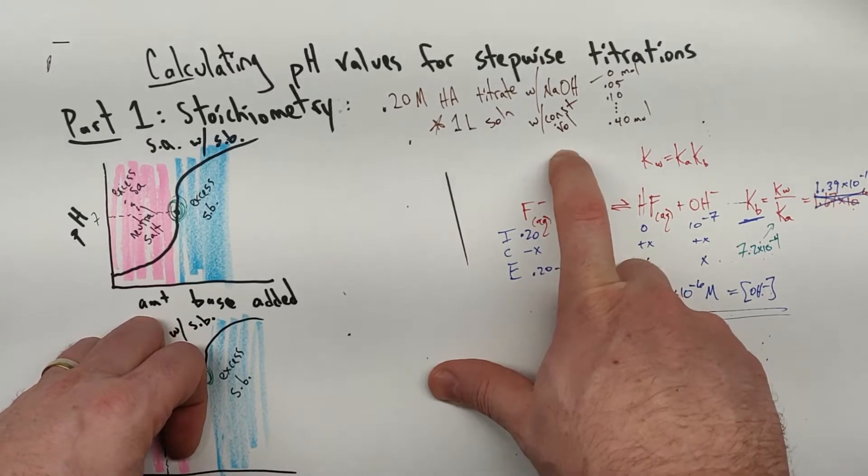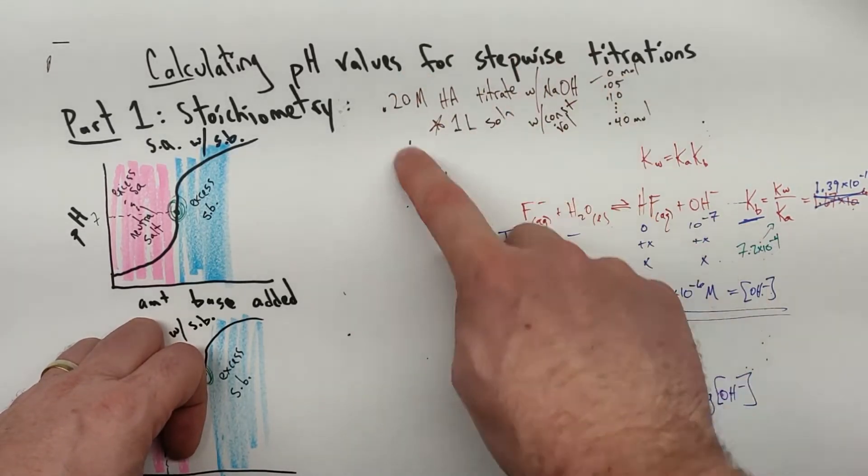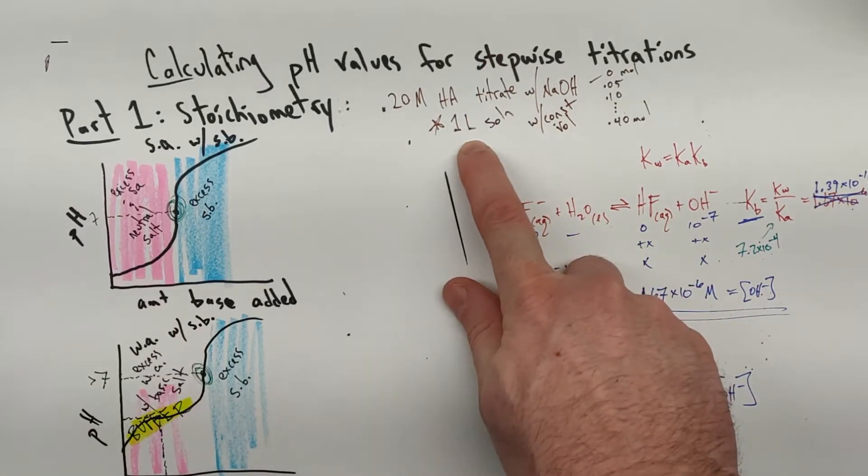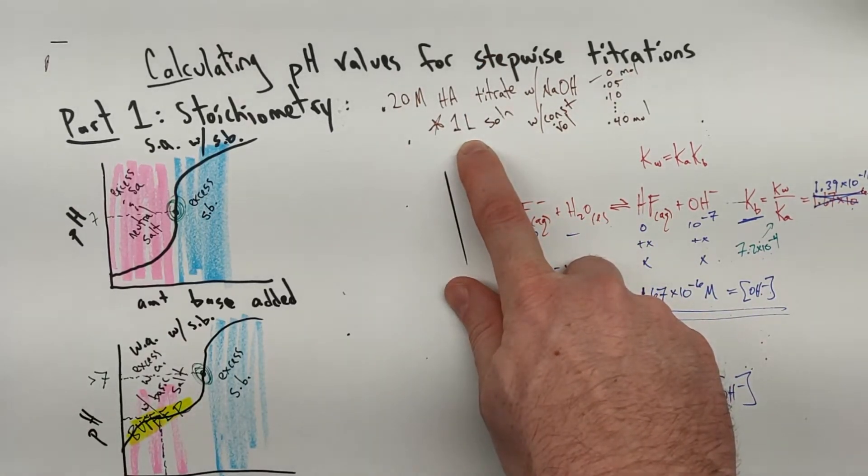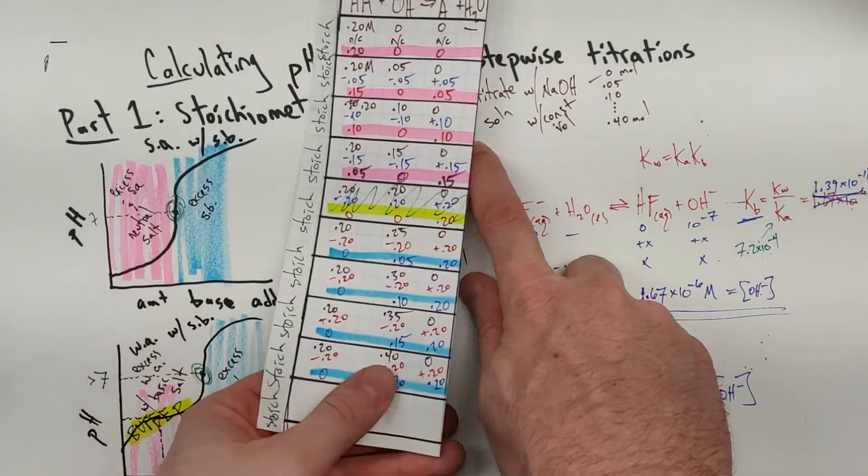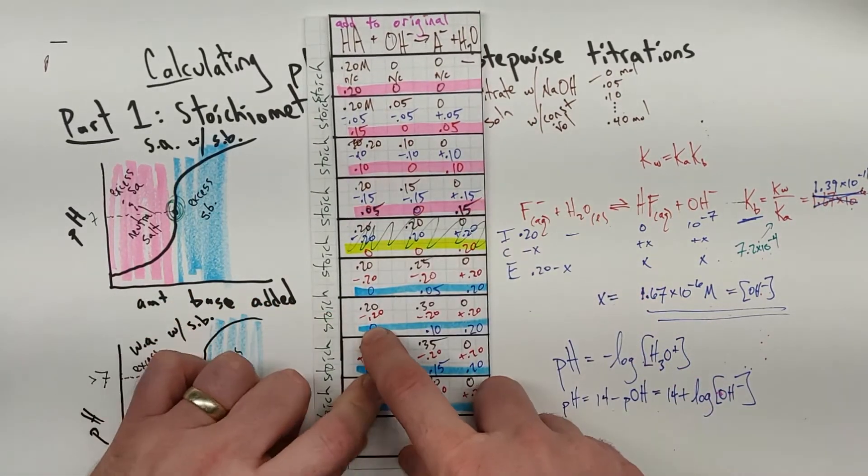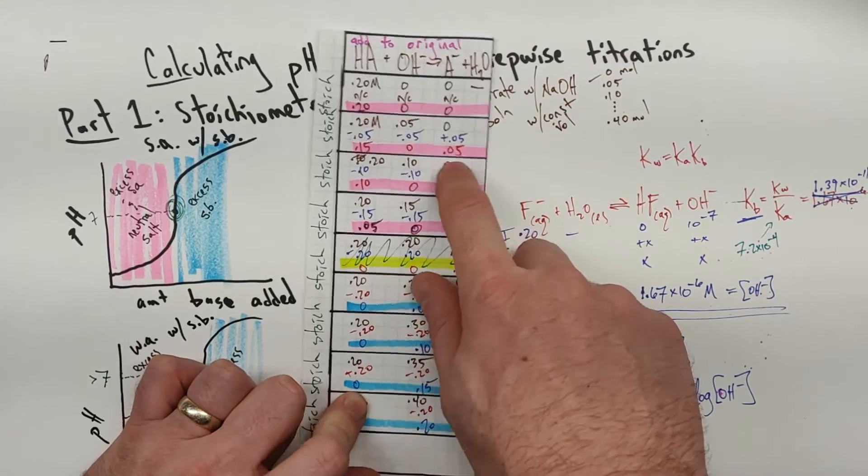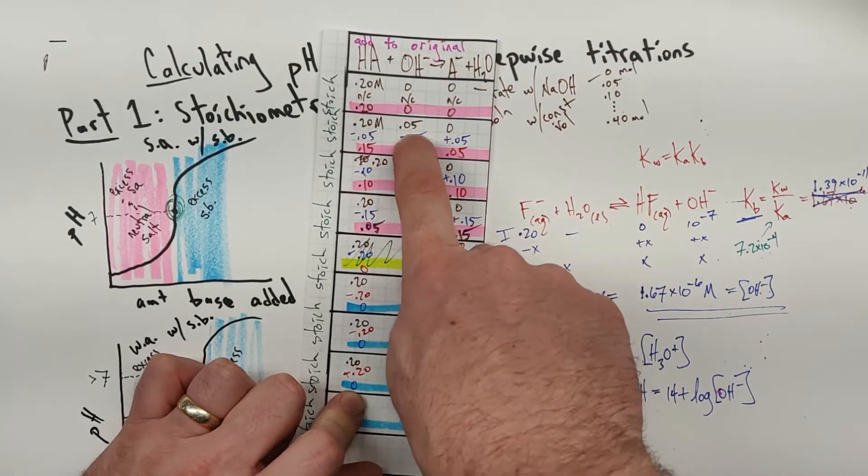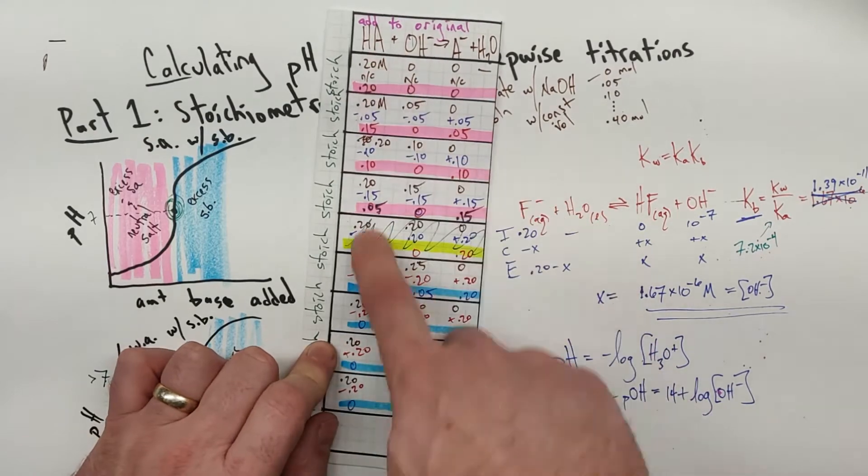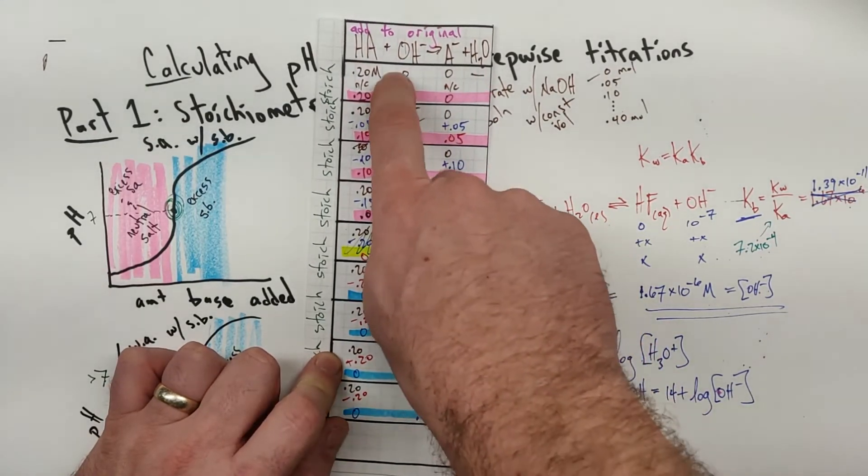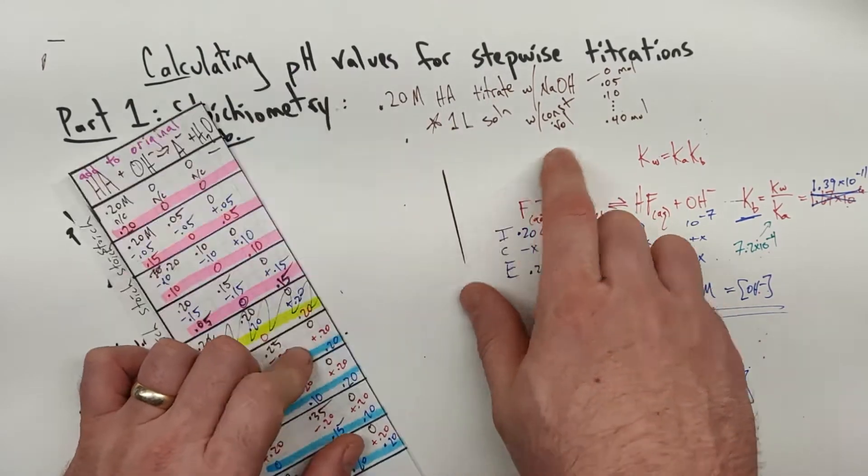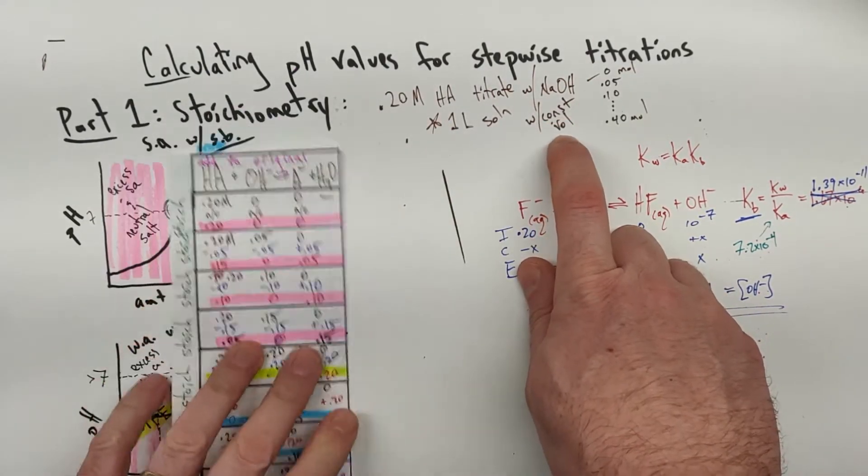That's a big difference. The example we calculated before assumed constant volume and I chose a constant volume of 1 liter because that allowed me to do my stoichiometry with molarities. So this was the math we had set up last time: 0.20 molar in 1 liter is 0.20 moles and I'm adding 0.05 moles at a time.